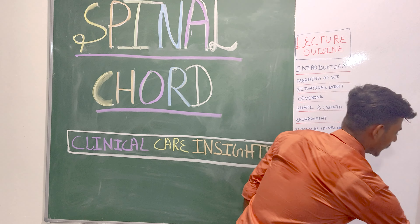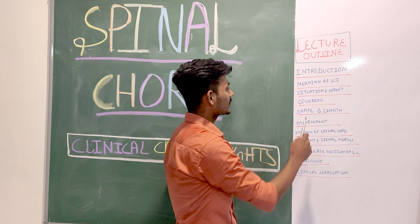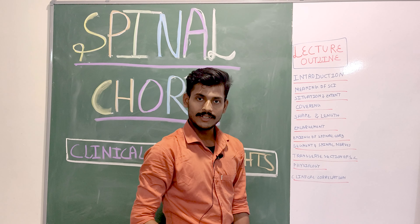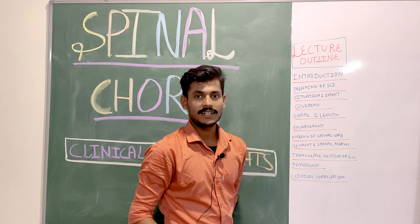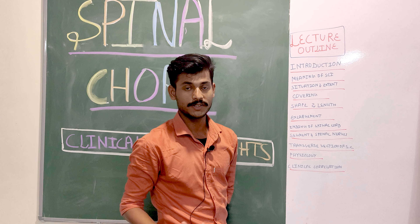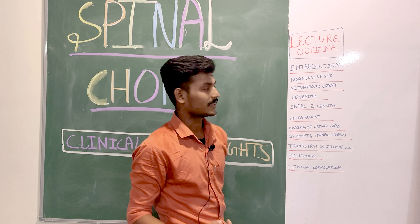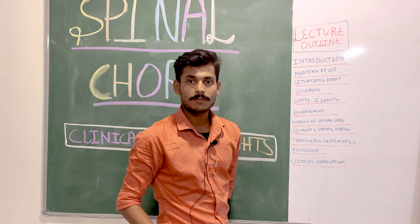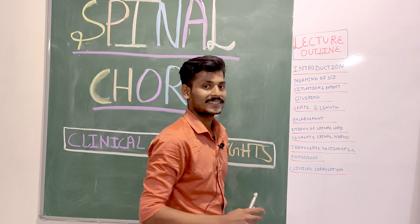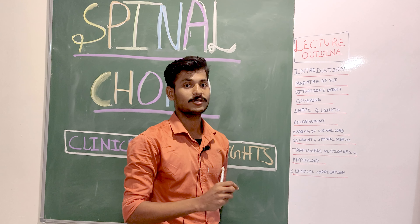In today's class we will discuss the introduction of the spinal cord, the meaning of SCI — which is basically a spinal cord injury — then how and where the spinal cord is situated in our body, and then we will discuss its protection and coverings.